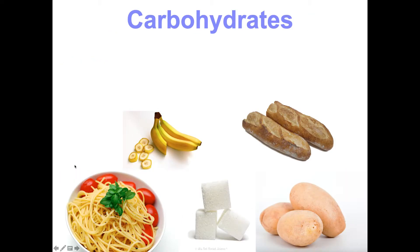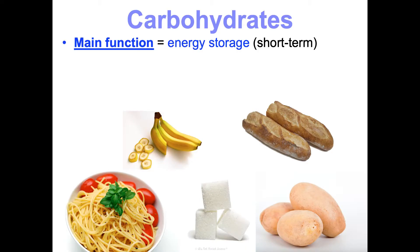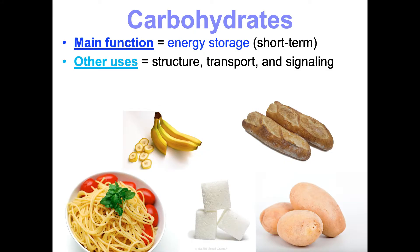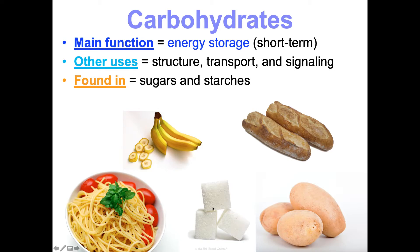Now let's talk about carbohydrates. They're in all sorts of things. Their main function is energy storage, specifically short-term — I like to think of them as your easy-to-access energy source. But they also have structural purposes, transport roles, and a key role in signaling. We find them in sugars and starches, not just refined sugar but also the sugars in fruits and starches in vegetables. When people say they're cutting out all carbs, they usually just mean unhealthy carbohydrates, because carbs are in so many things and we need them.